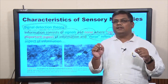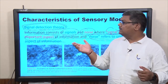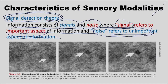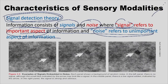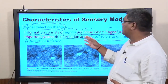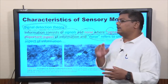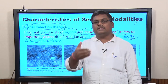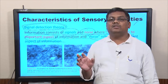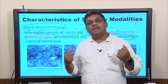We left off with signal detection theory, which is a characteristic of the sensory modality. Signal detection theory tells you how people make errors and how to read those errors. Any information that comes to you can be in terms of signals and noise — signal refers to the important aspect of information and noise to the non-important aspect. I described how a radiologist reads an X-ray to explain signal detection theory. Today we will look at how signal detection theory actually works and examine some of its parameters.